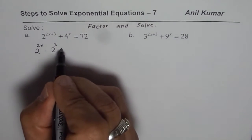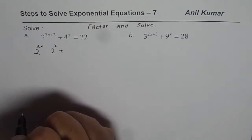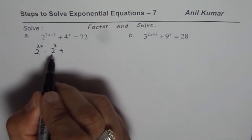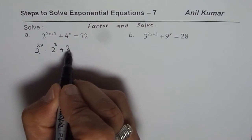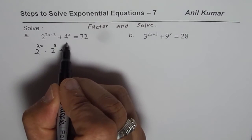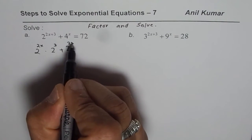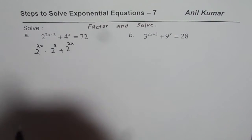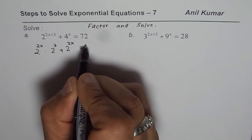Now the second number for us is 4 to the power of x. Can you write 4 as 2 to the power of something? Yes you can. Just as we did earlier, 2 to the power of 2 is 4, so it is 2 to the power of 2x which is 4 to the power of x. The right hand side is 72.